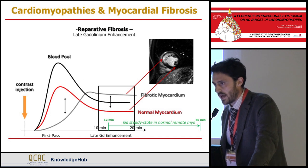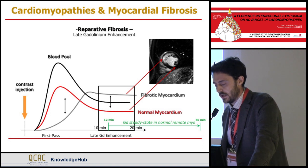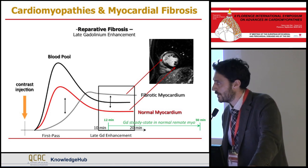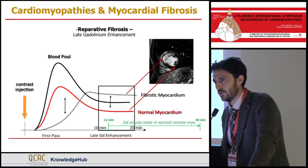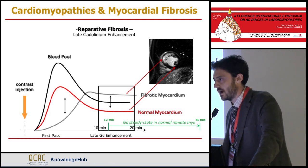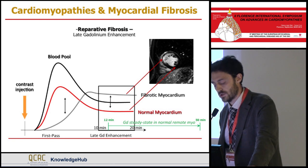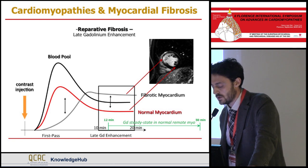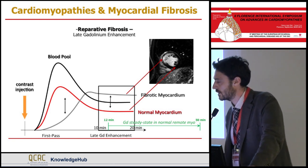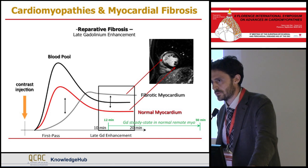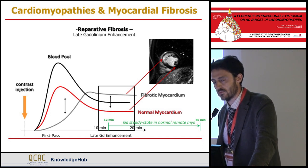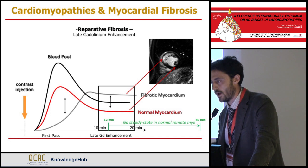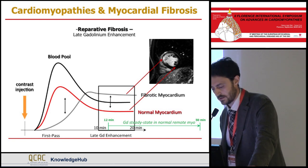So if we apply this technique in this interval time, we see the fibrotic myocardium as hyperintense — there is late gadolinium enhancement. The normal remote myocardium is dark, artificially nulled by an inversion recovery pulse. The signal intensity difference between the fibrotic myocardium and the normal myocardium is up to 500%, with an in-plane spatial resolution of about 2 millimeters — excellent spatial and contrast resolution.